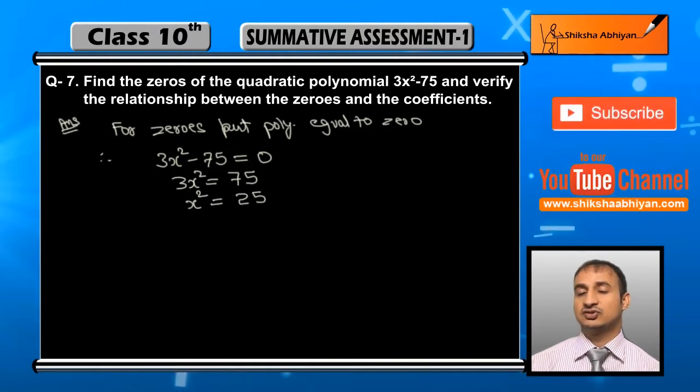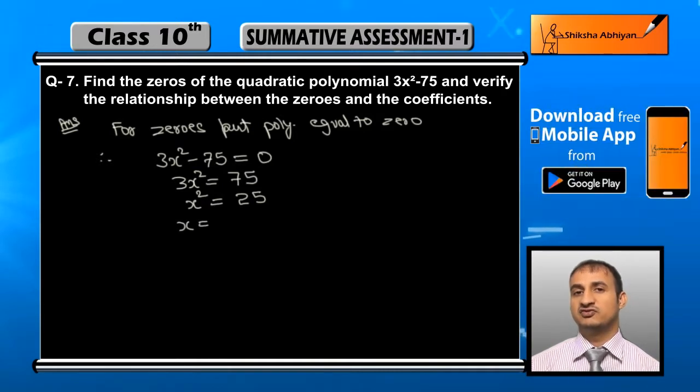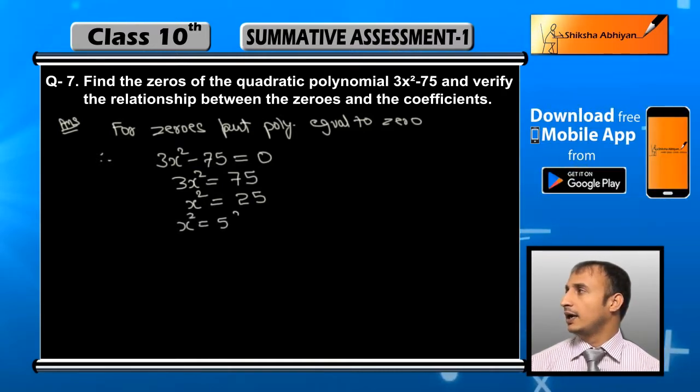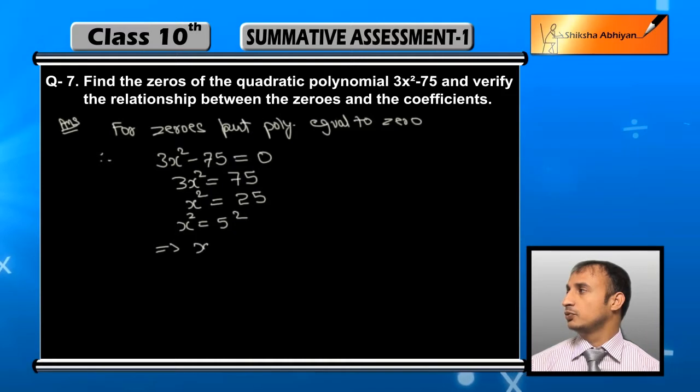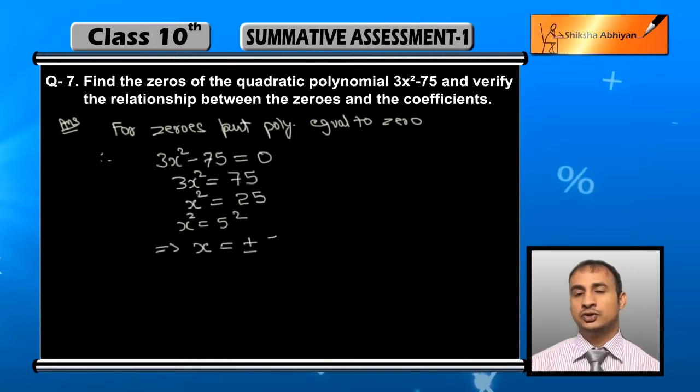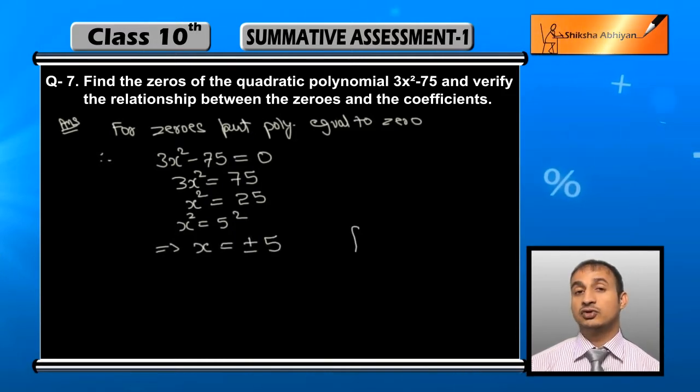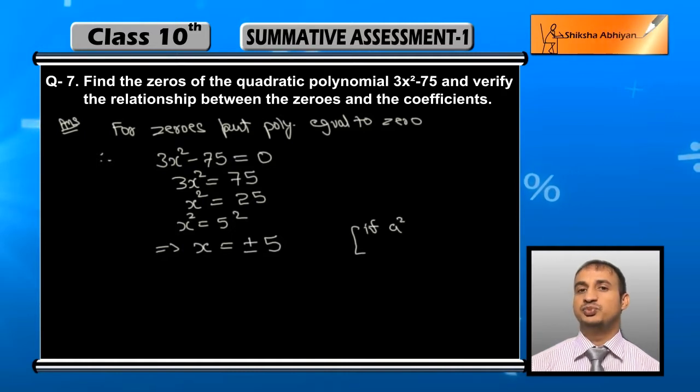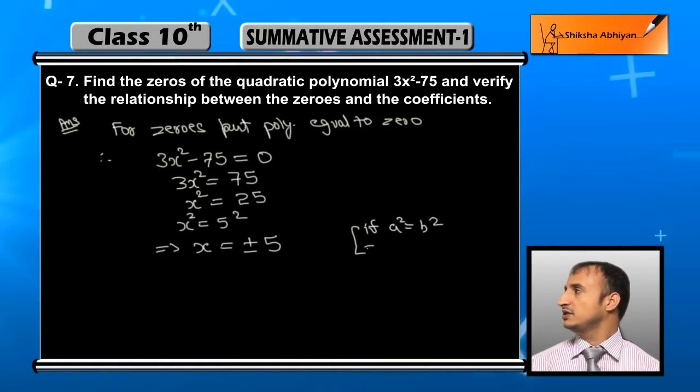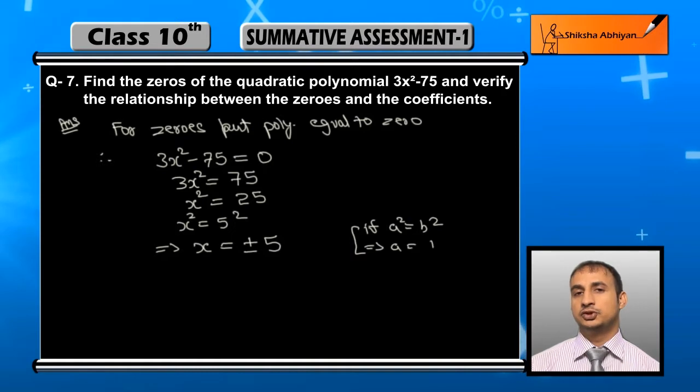x² can be written as 5², since 25 equals 5 squared. This implies that x equals plus or minus 5. You know that if a² equals b², then a equals plus or minus b. So our zeros are plus 5 and minus 5.